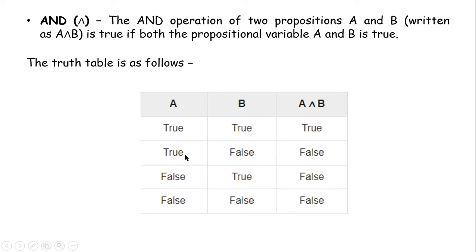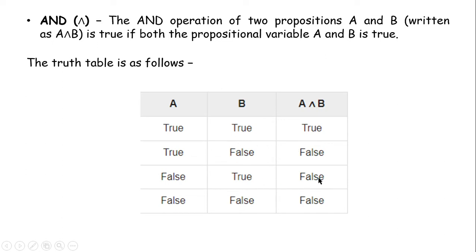If A is false and B is true, then A AND B is false because both are not true here. If A is false and B is also false, A AND B is obviously false. So for A AND B to be true, both variables A and B must be true. In the truth table, only the first row where both A and B are true gives a truth value of true; all other rows give false.